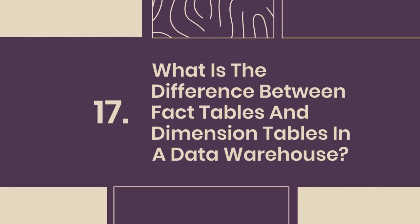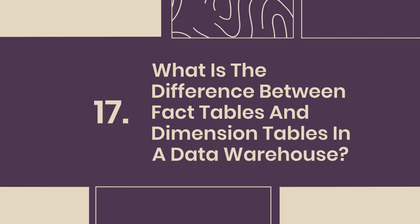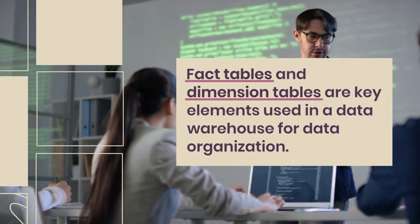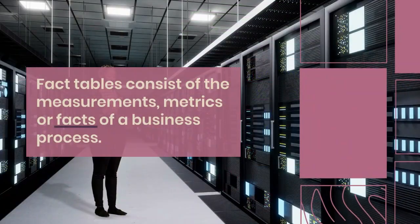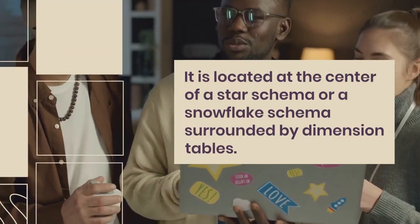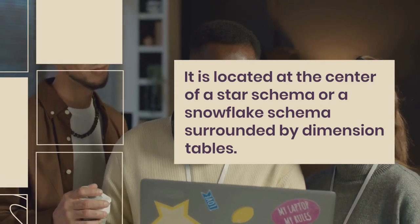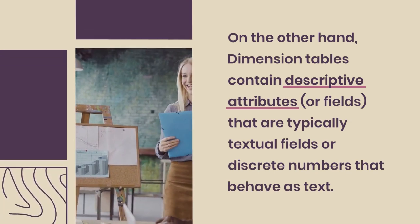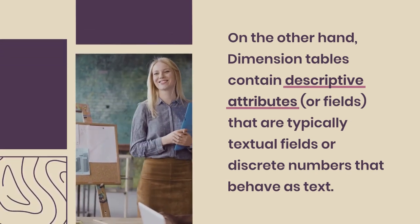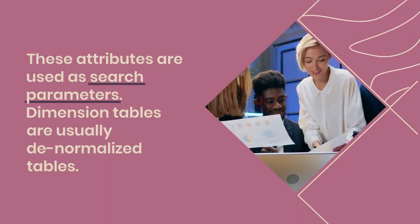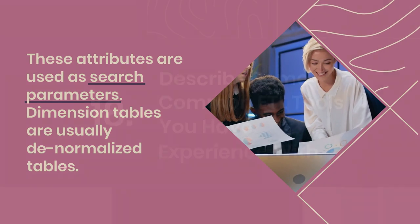Question 17: What is the difference between fact tables and dimension tables in a data warehouse? Fact tables consist of the measurements, metrics, or facts of a business process, located at the center of a star schema or snowflake schema surrounded by dimension tables. Dimension tables contain descriptive attributes — typically textual fields or discrete numbers — used as search parameters, and are usually denormalized tables.